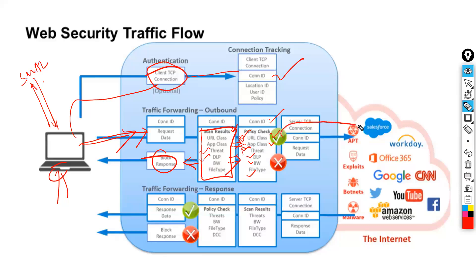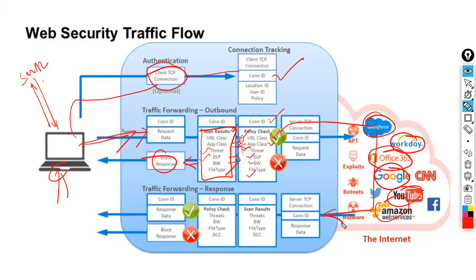Once all policy checks pass, an outbound connection is established to the destination servers — whether Google, Workday, Salesforce, YouTube, Amazon, or any other service. This is the in-to-out connection. When the server sends a response, the reverse traffic — the response data — comes back and a TCP server connection is established from the ZEN point of view, with a connection ID allocated again.